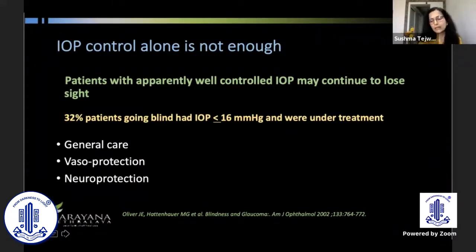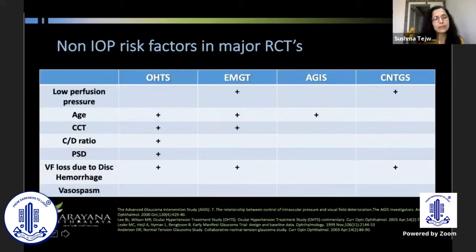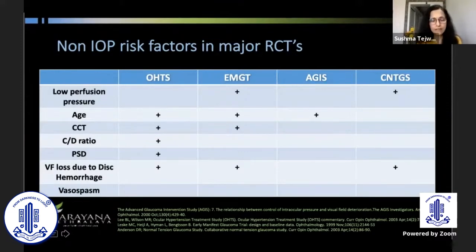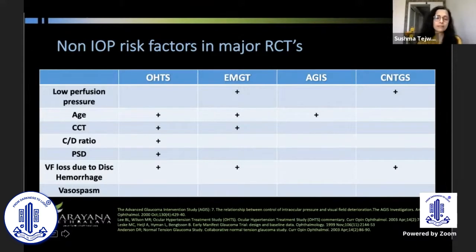In major RCT trials, there are established risk factors for progression or development of glaucoma, which include age, central corneal thickness, CD ratio, pattern standard deviation on perimetry, disc hemorrhage, and vasospasm. And there are many more which have been added later.